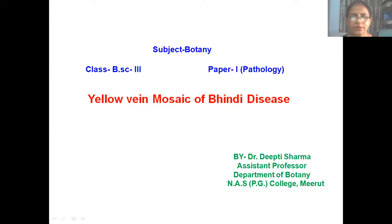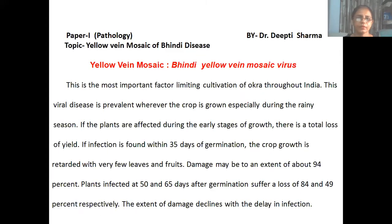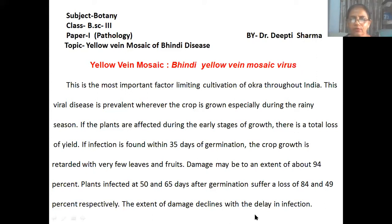Good morning students. Today our topic is yellow vein mosaic of okra disease. Yellow vein mosaic is the most important factor limiting cultivation of okra throughout India. This disease is prevalent whenever the crop is growing, especially during the rainy season.